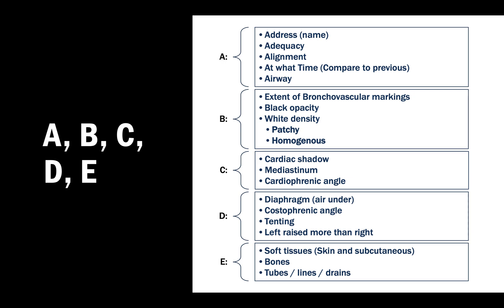E - have a look at soft tissues, skin, subcutaneous tissue, bones, ribs, any fractures, and tubes, lines, and drains - very important for surgeons. This is the ABCDE approach, which is the suggested way recommended to look at chest X-rays.